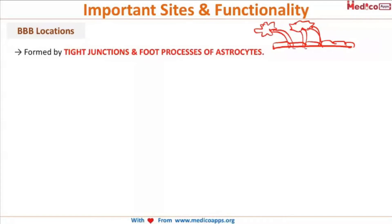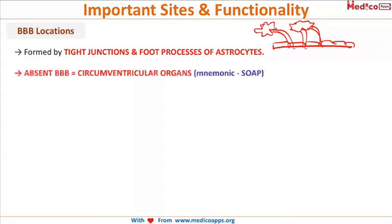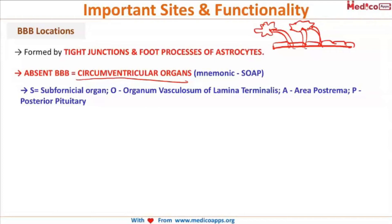One important exam point to remember is that the blood-brain barrier is absent in the circumventricular organs. You can remember these with the mnemonic SOAP: S stands for subfornicial organ, O is organum vasculosum of lamina terminalis (also known as OVLT), A stands for area postrema, and P is for posterior pituitary. All of these structures lack a blood-brain barrier.